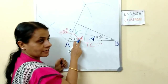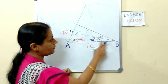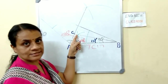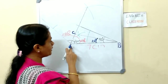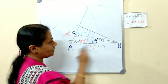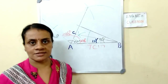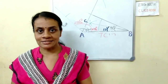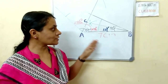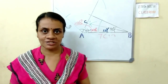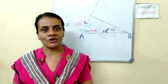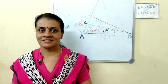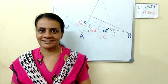Angle A is 67 and a half degrees, angle B is 15 degrees, and this is point C. This is triangle ABC. It's time to wind up the class — hope that you have understood this construction. See you again in the next class. Take care, thank you.